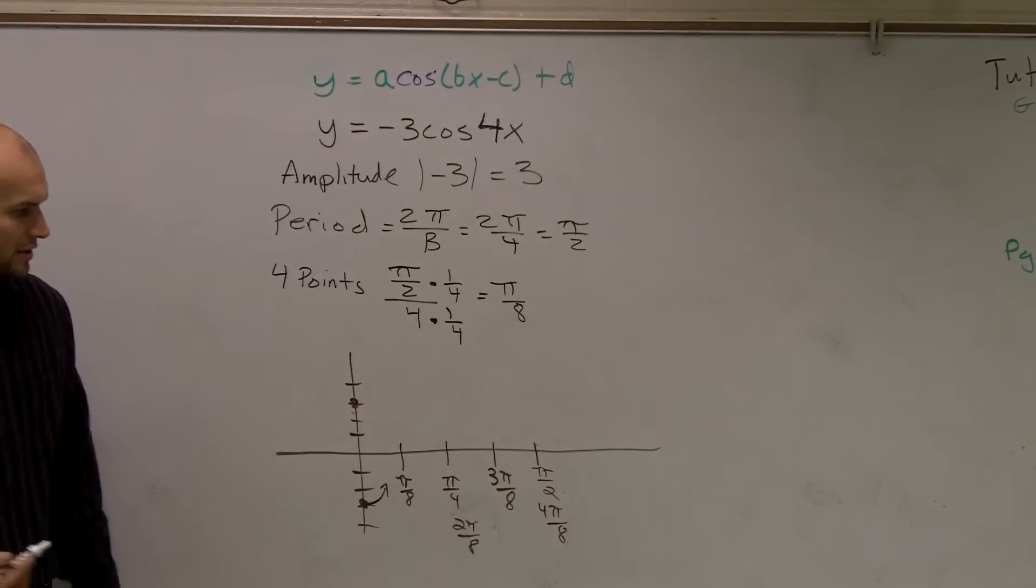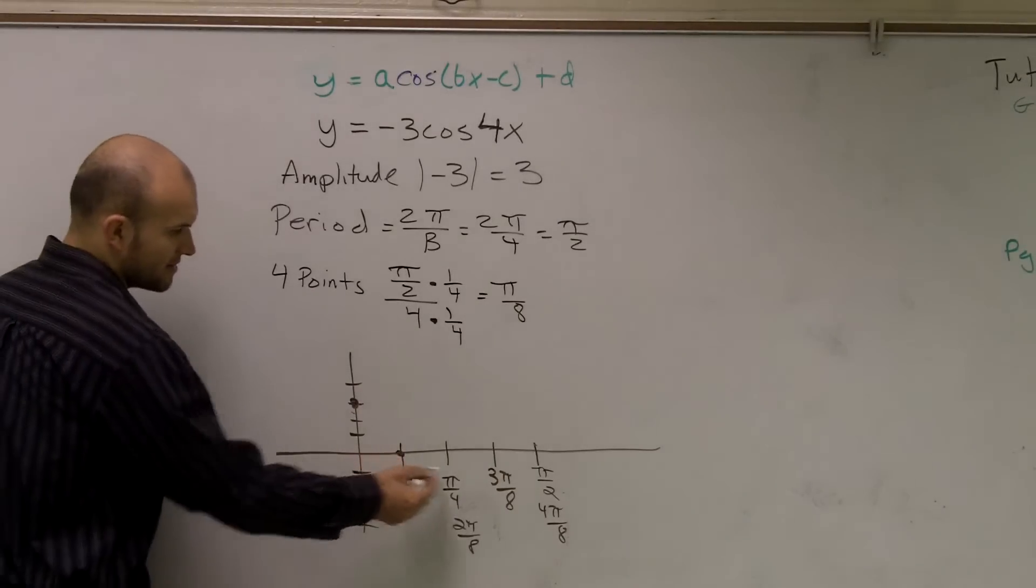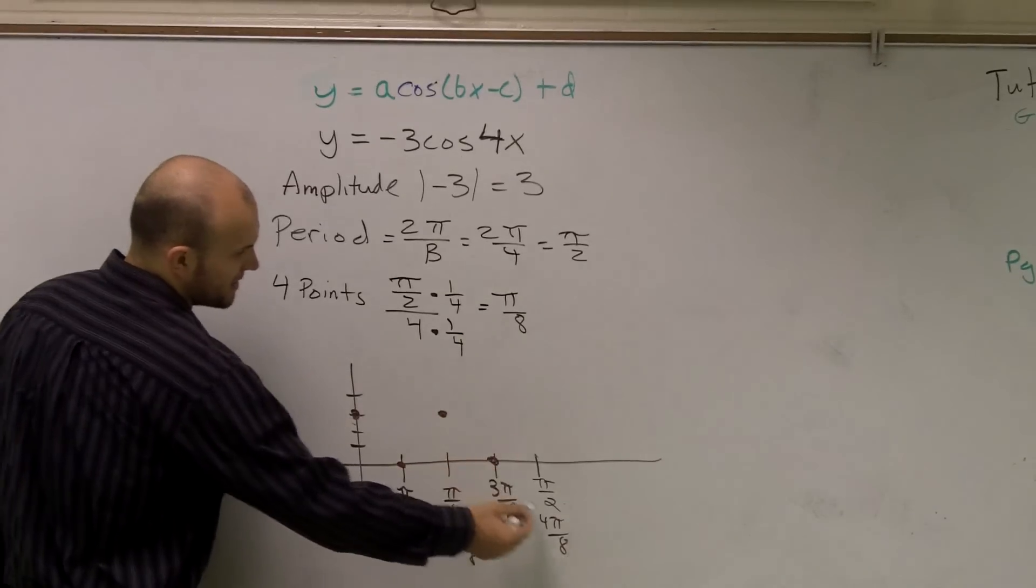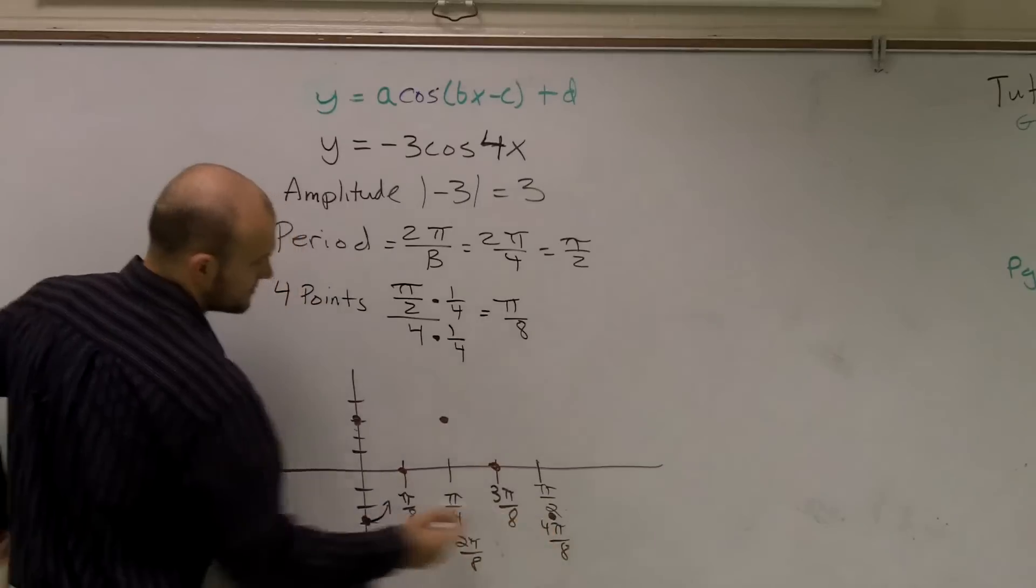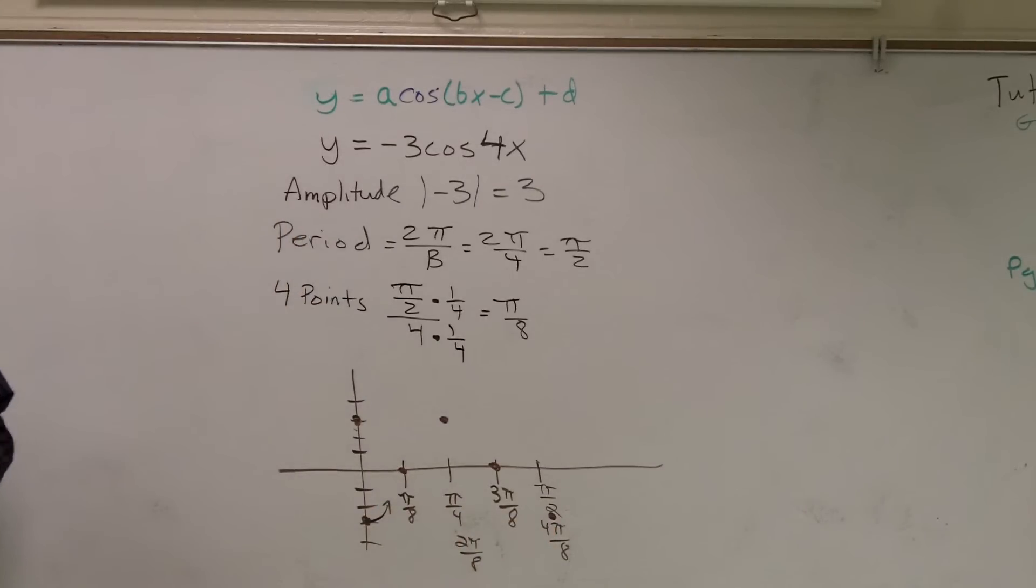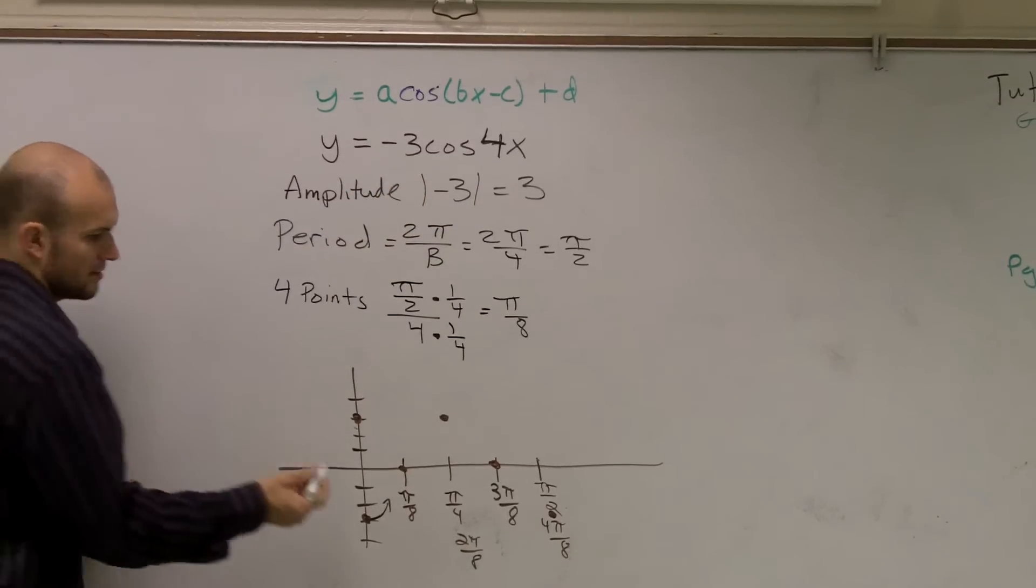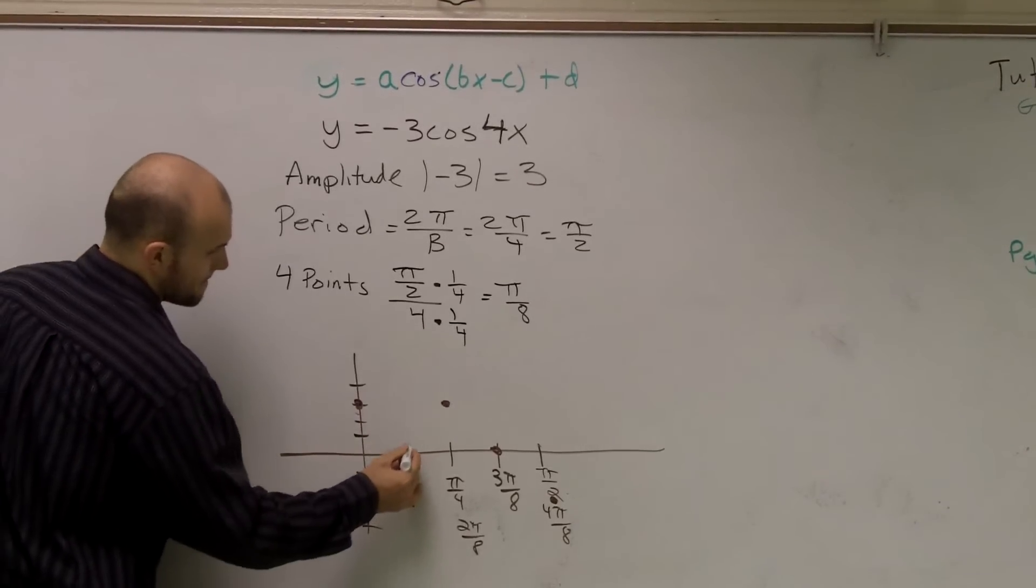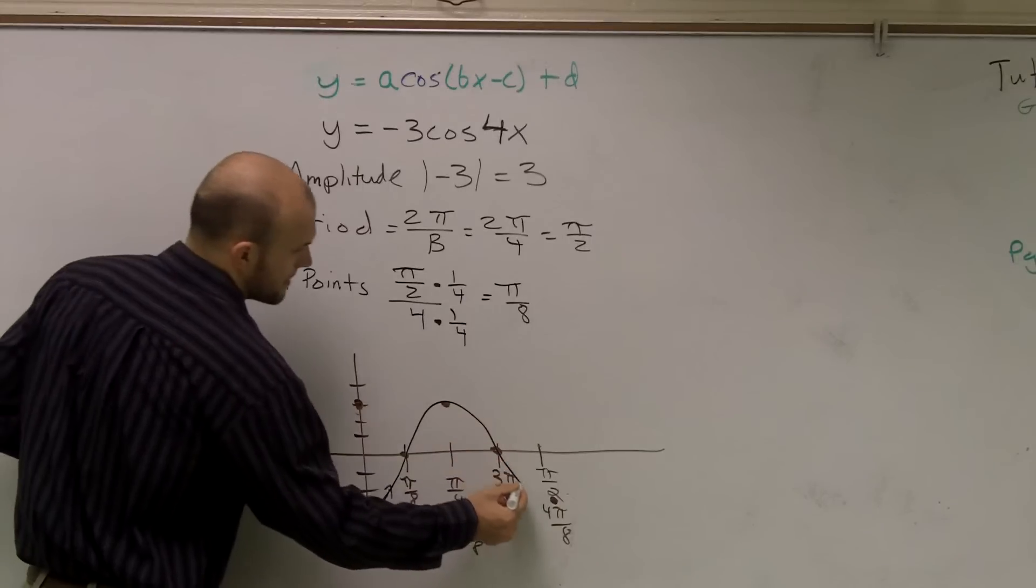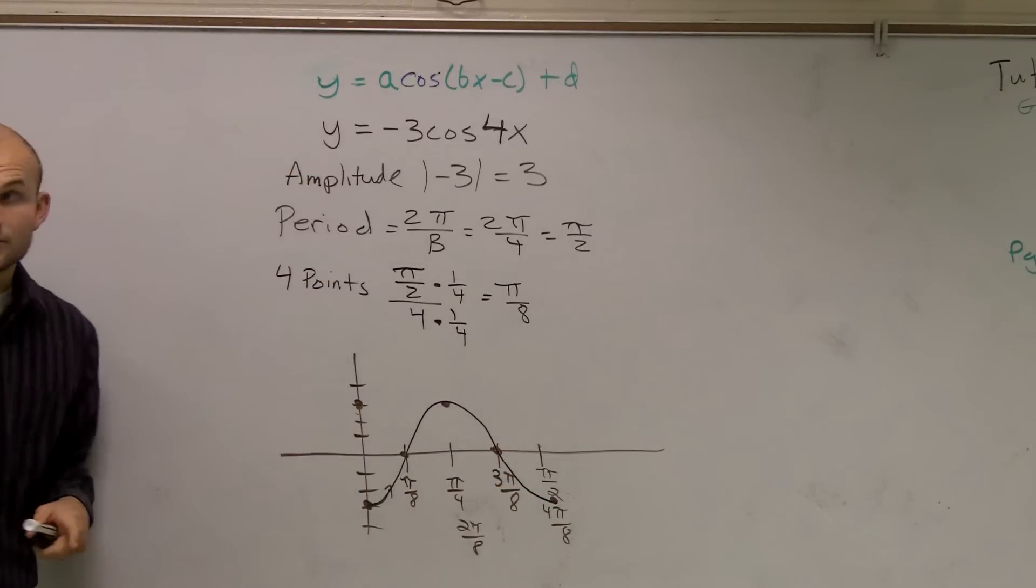So if you guys remember your cosine graph, it's going to cross here. Its maximum is going to be here. Cross back here. And then it's going to end down there. So I've already counted my reflection and I have my new period. So I go up, cross. So that is one period.